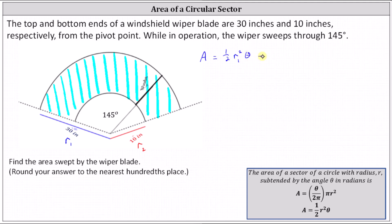And then minus the area of the sector with the radius of 10 inches, which is one-half times the square of r sub 2 times θ.